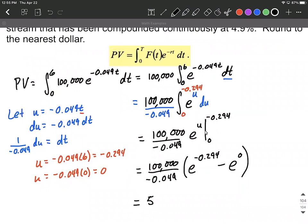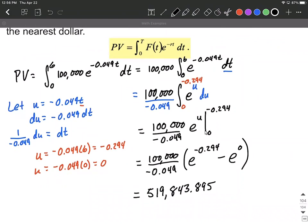But I got 519,843.895. And in rounding to the nearest dollar, we're going to round that up to $519,844.